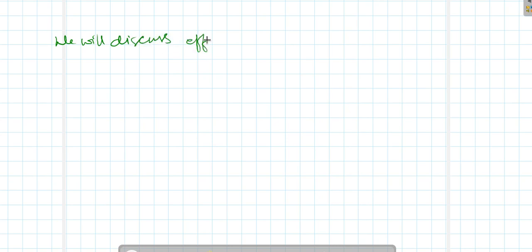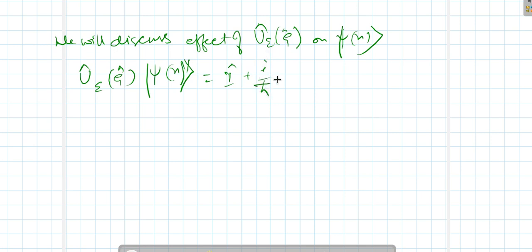Now we will discuss the effect of U_ε on ket psi. So U_ε(G) psi(x) can be written as I plus iota over ℏ epsilon px into psi(x). So it is psi(x) plus iota over ℏ epsilon px psi(x).